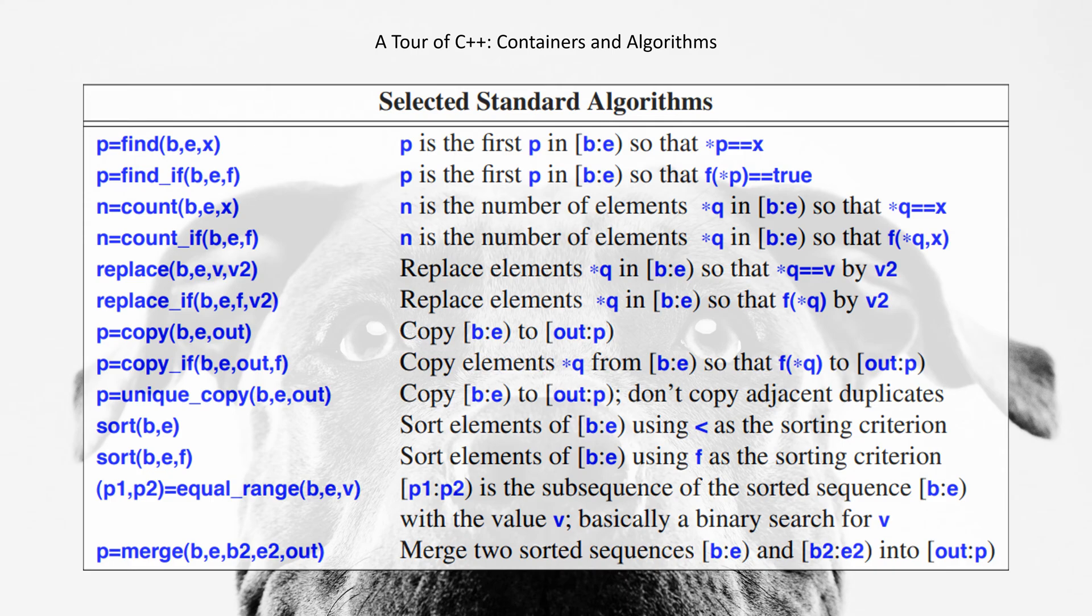p=copy_if(b,e,out,f) - Copy elements *q from [b,e) so that f(*q) is true to out.